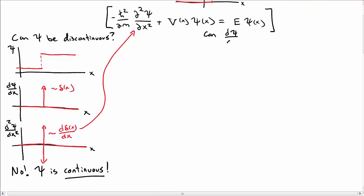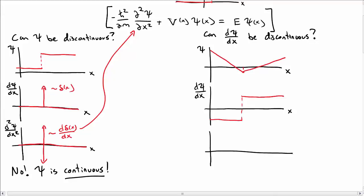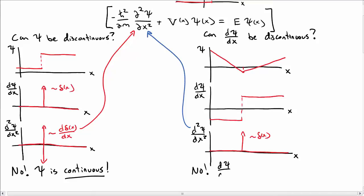So psi has to be continuous. Can the derivative of psi be discontinuous? We know psi must be continuous, but can the derivative be discontinuous? Consider a wave function psi that comes down and then comes up so that the derivative is discontinuous at this point, but psi itself is continuous. The derivative of psi looks like a step function — negative until the discontinuity, then positive. The second derivative of psi is then like a delta function, and you won't be able to solve Schrödinger's equation if the derivative of the wave function is discontinuous.